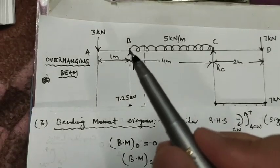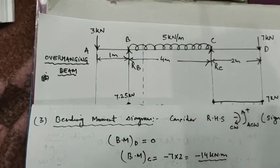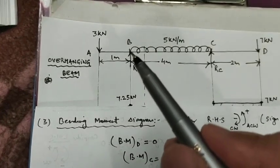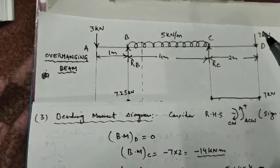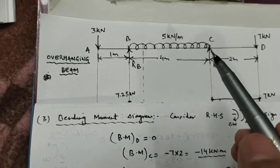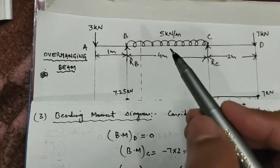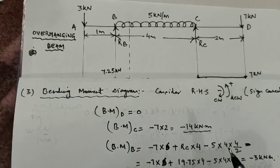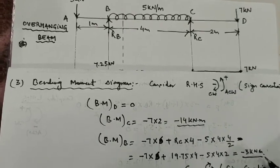To find the bending moment at point B, it is easier to consider the left-hand side, but let us verify using the right-hand side for practice. The bending moment at B is: minus 7 into 6 (clockwise, negative), plus RC into 4 (anticlockwise, positive), minus 5 into 4 into half the distance (UDL centered). Substituting: minus 42 plus 79 minus 40 gives minus 3 kNm.